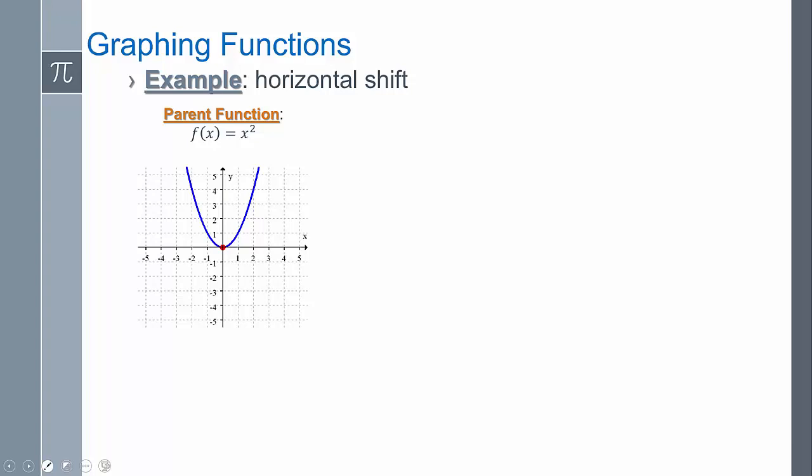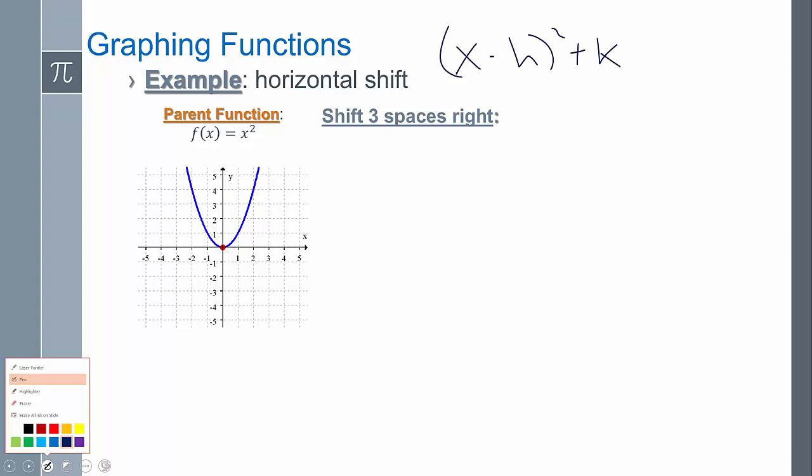Let's examine the horizontal shift. If I wanted to shift it three spaces to the right, that basically means my h is three. If our formula is x - h squared plus k, and h is 3, that's going to be x - 3.